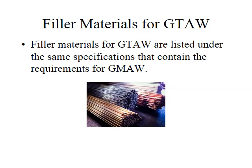Bottom line: GTAW and GMAW filler materials are the same thing. The GMAW filler metal comes on spools, reels, or 500-pound barrels, and the gas tungsten arc welding form comes in cut lengths in a box. This is the same welding material from a mechanical property standpoint and the same in regards to chemical analysis of the weld deposit. The only difference is the form that the wire comes in.